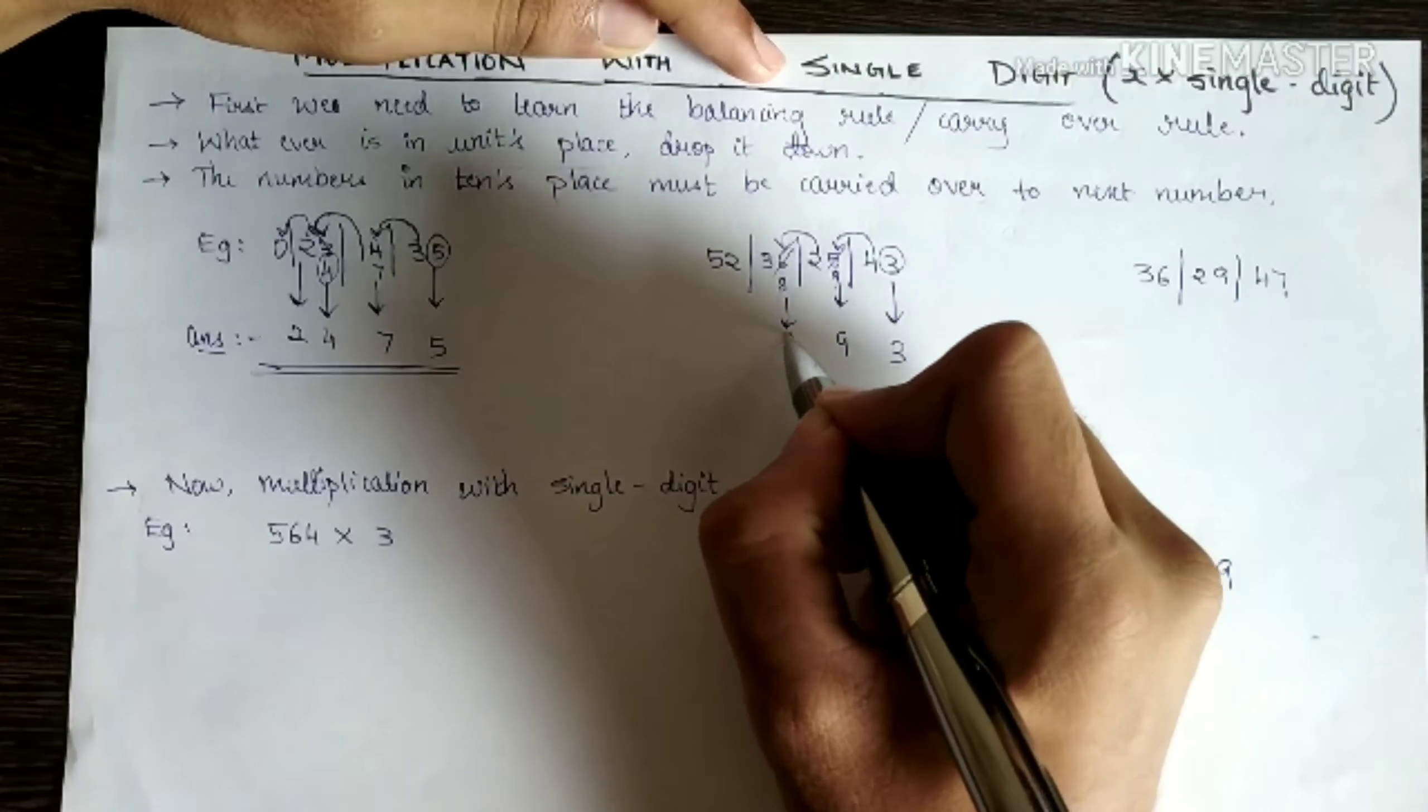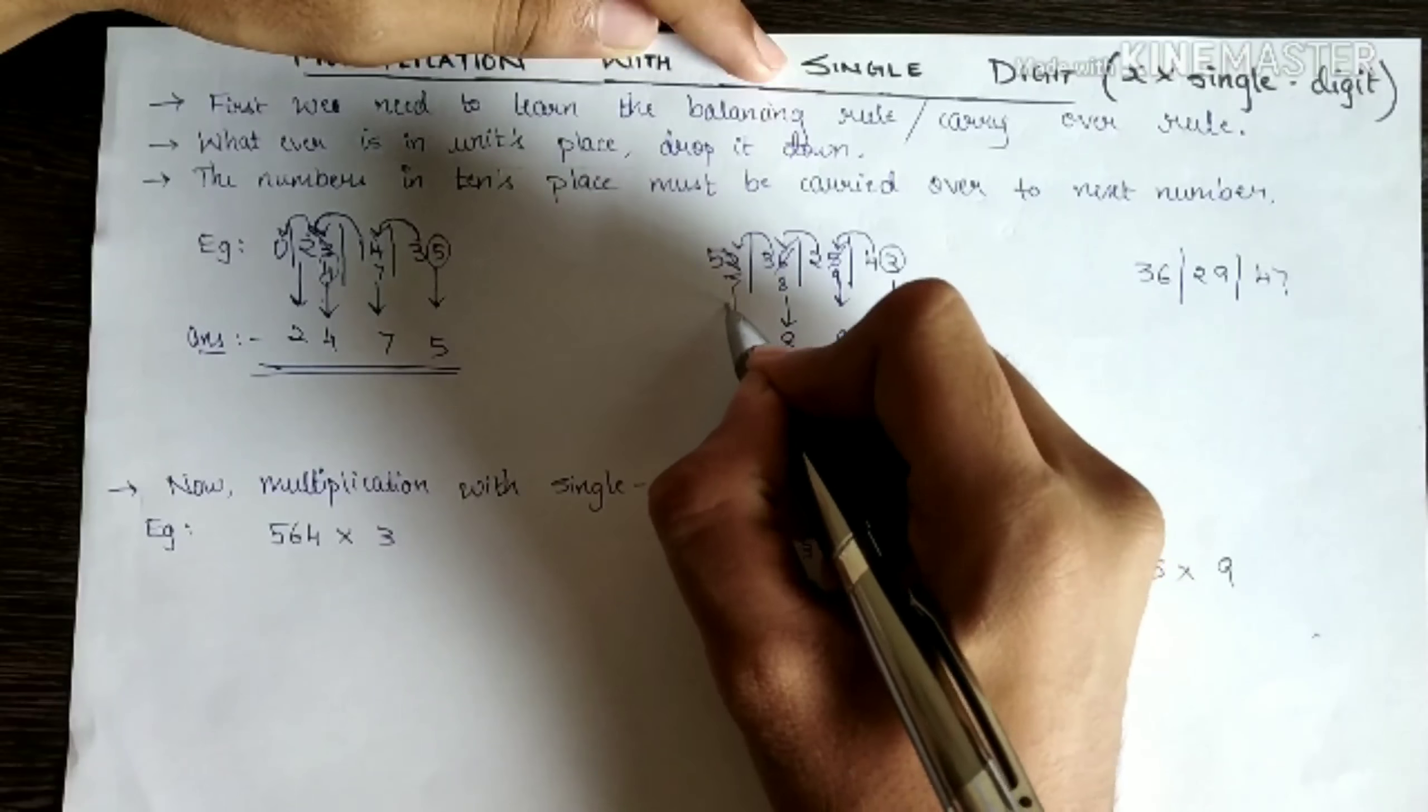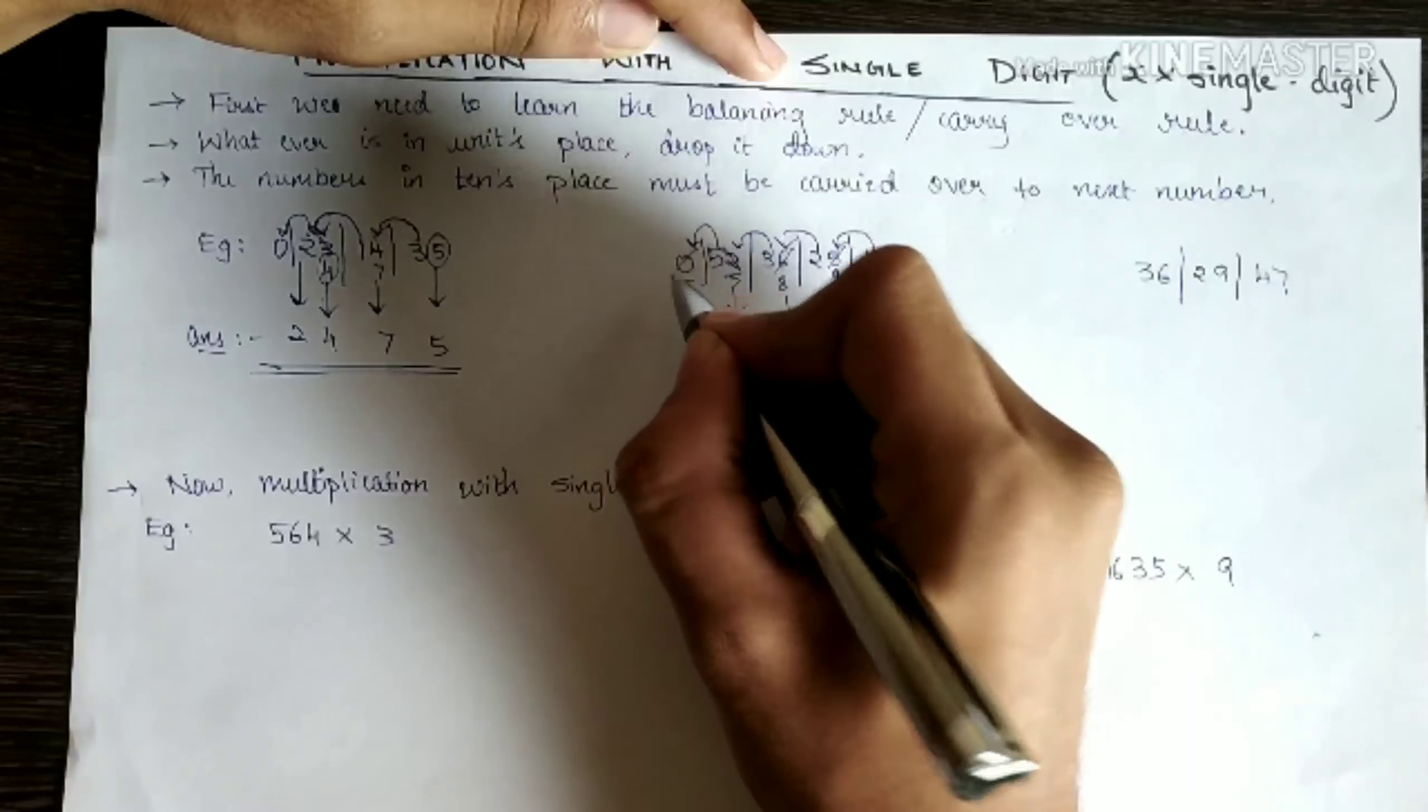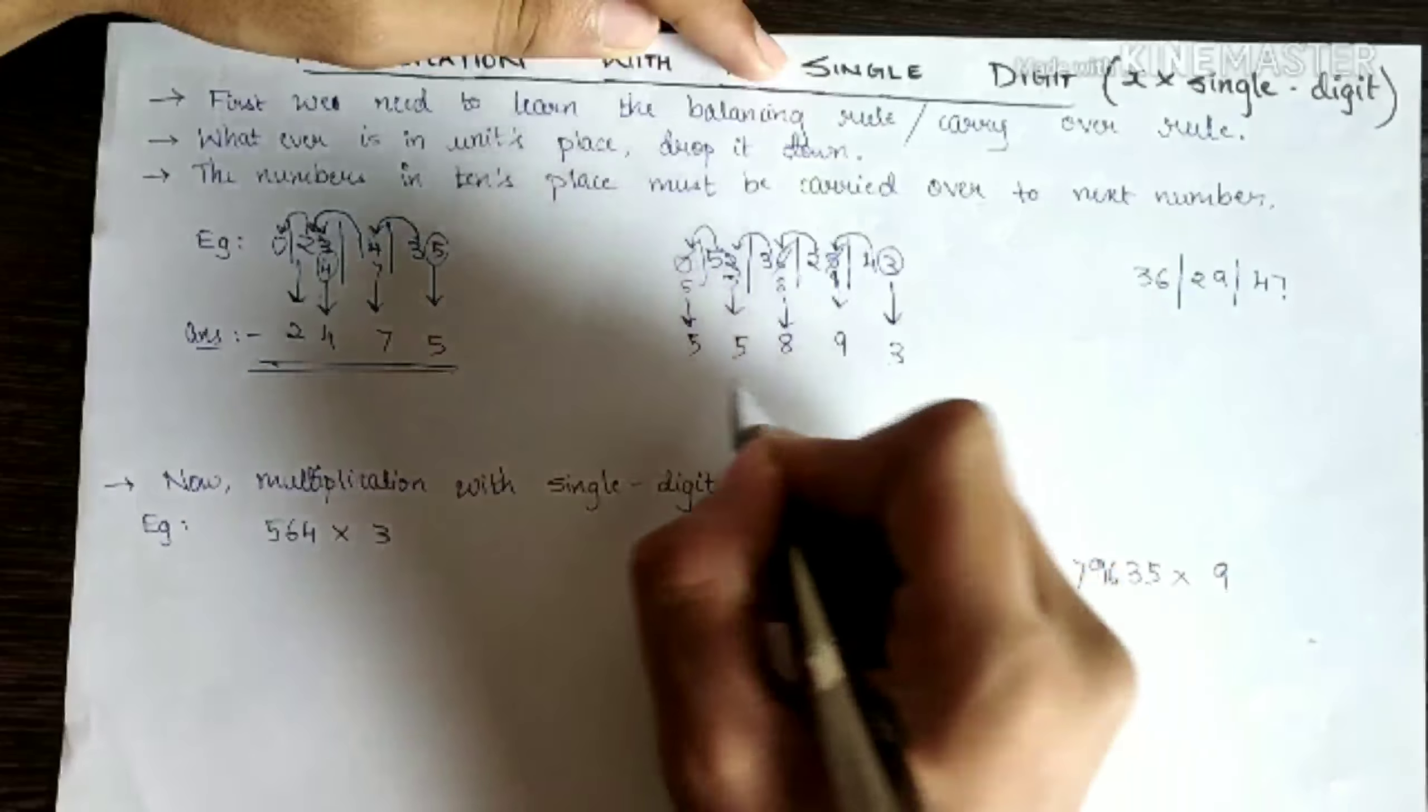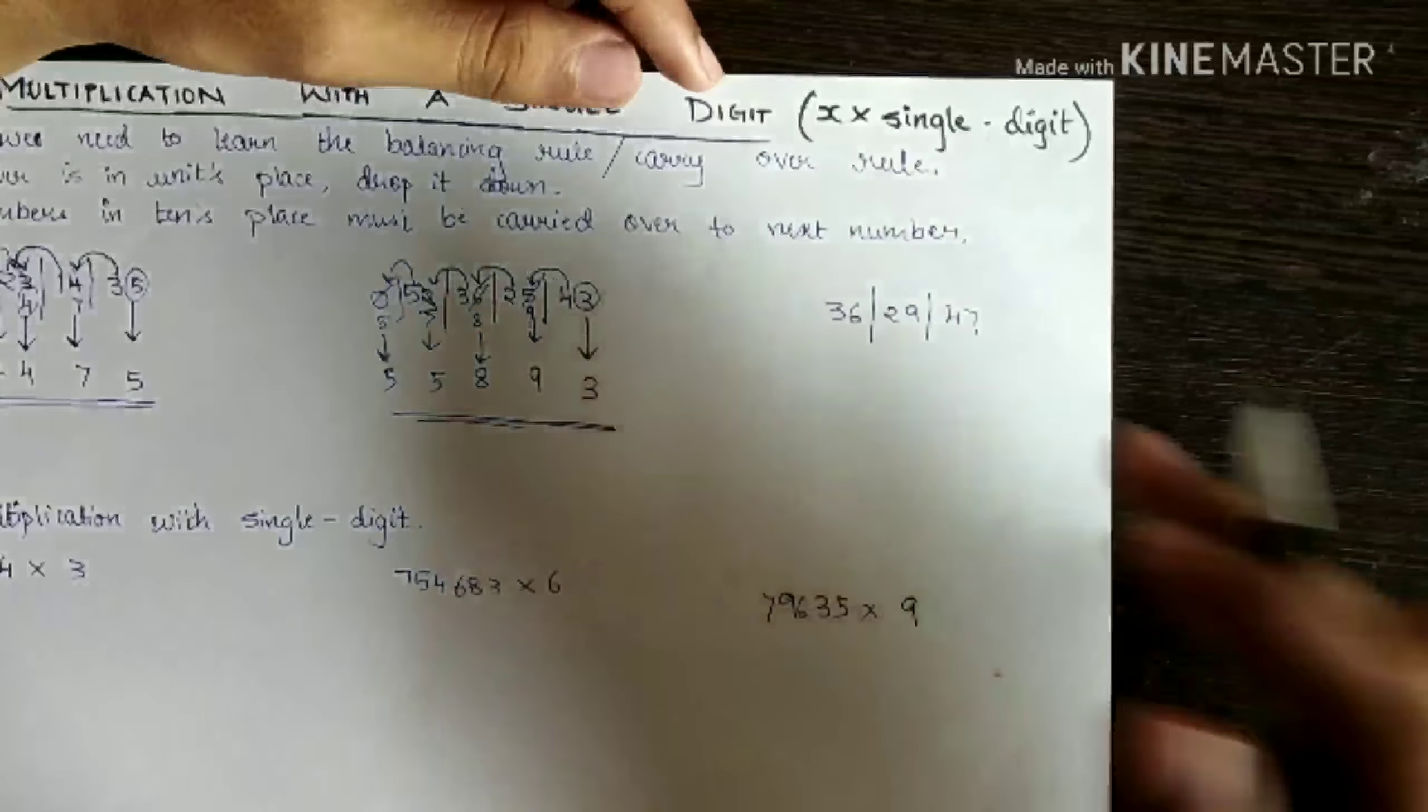Drop that down. Three plus two is five. This becomes five. Drop it down. This is zero. So five plus zero is five. Drop it down. So answer is five five eight nine three. In that way we are supposed to do. Now the next one.